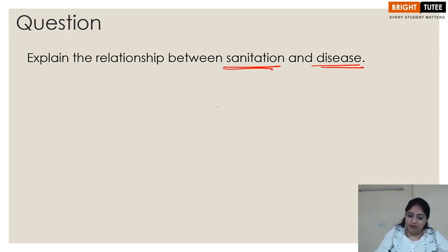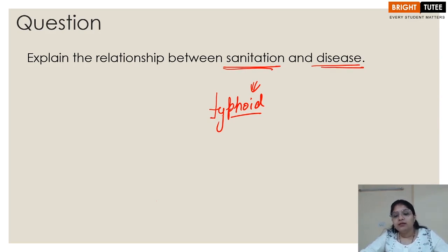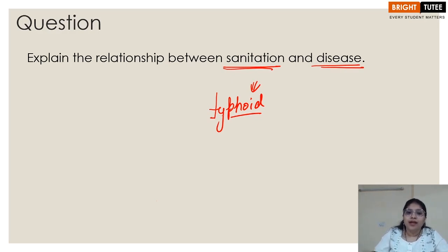For example, typhoid is a waterborne disease. People get it when they come in contact with water contaminated with feces of a person already suffering from the disease. If we manage human excreta and sewage in such a way that people do not come in contact with it, it will help in sanitation and thus help in curbing diseases in that area.